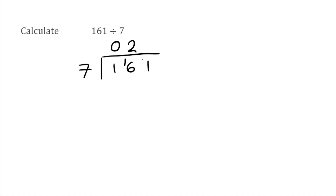Then finally we look at how many 7s can fit into 21, and that would be 3. So for this example, 161 divided by 7 is 23.